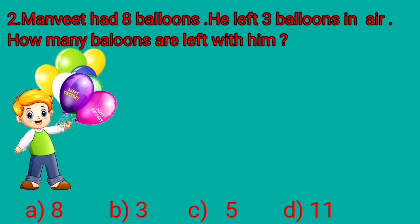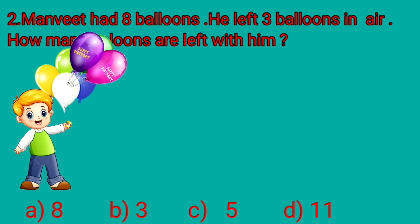Manveet had 8 balloons. He left 3 balloons in air. How many balloons are left with him? Manveet had 8 balloons. And kids, out of 8 balloons, he left 3 balloons in air. It means the number of balloons became less than 8 and less means subtraction.